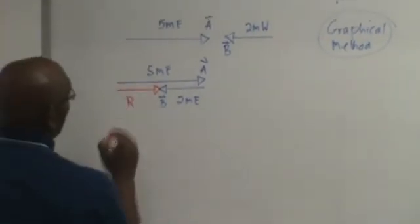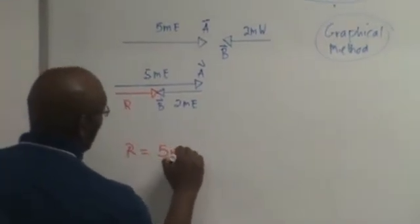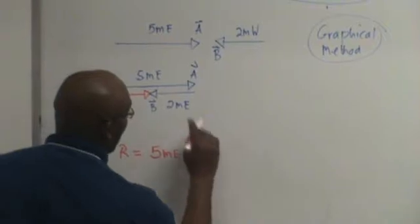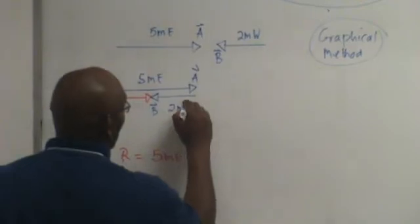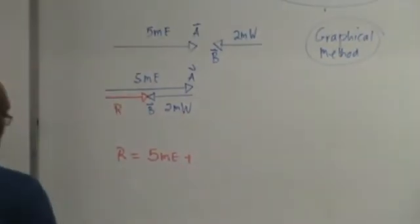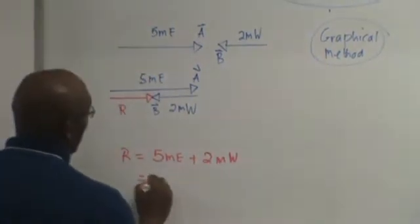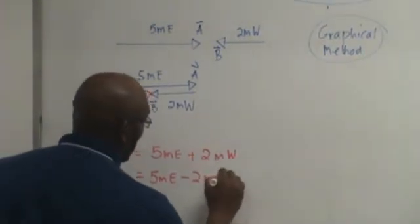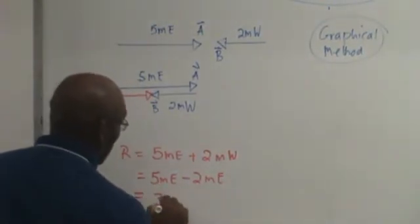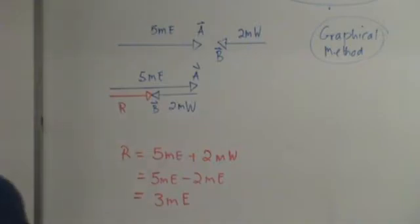This is R. So now R is equal to 5 meters east plus 2 meters west, which is the same as 5 meters east minus 2 meters east, which is 3 meters east. So that's what you do when you have vectors pointing in opposite directions.